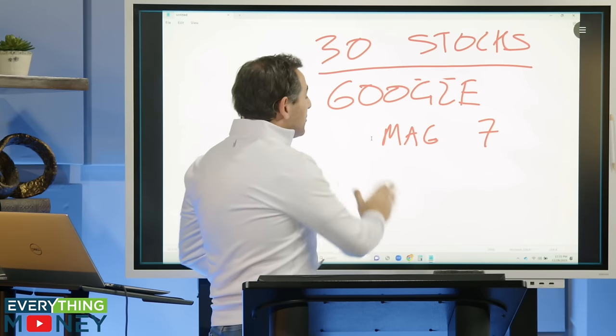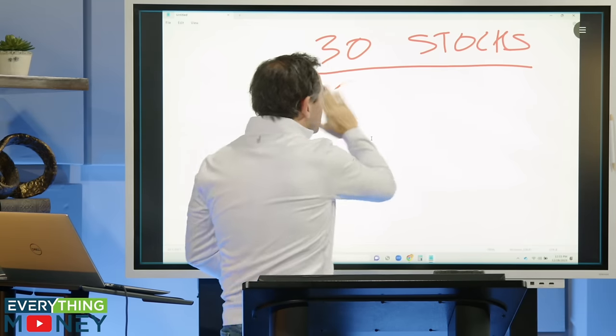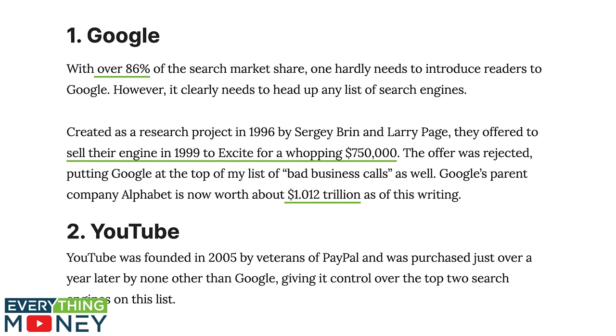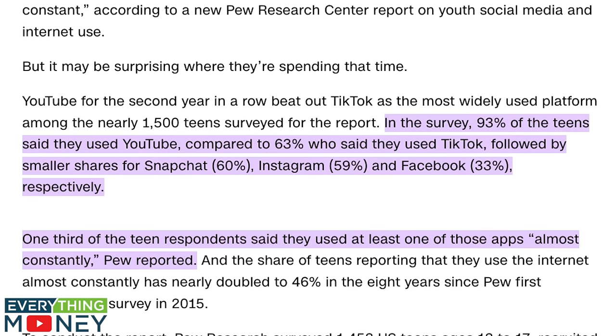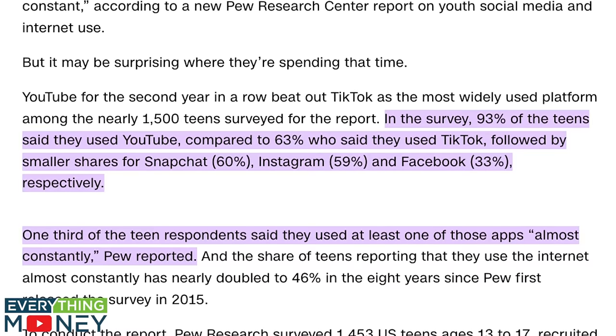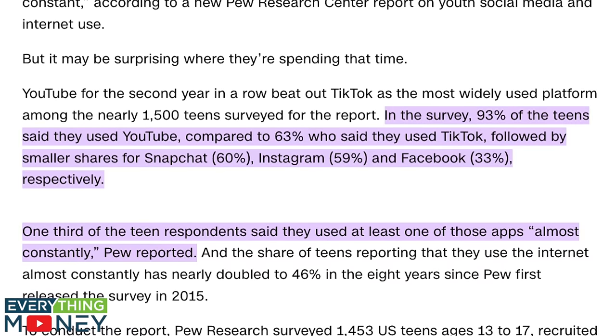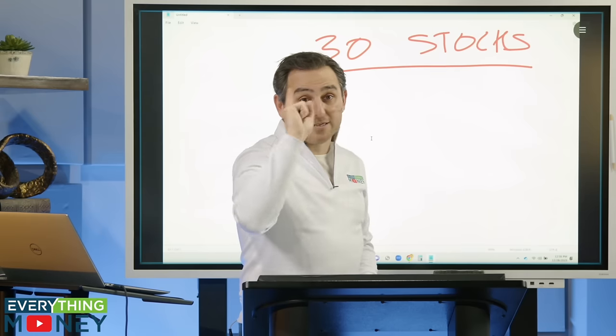They dominate search. The top two search engines in the world are YouTube and Google. I just saw the other day, teenagers spend 93% of their time on YouTube, 63% of their time on TikTok. So Google is the great one.